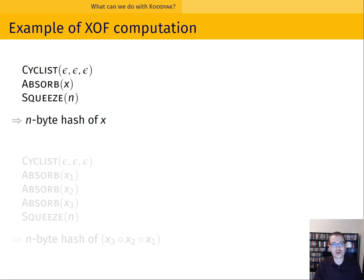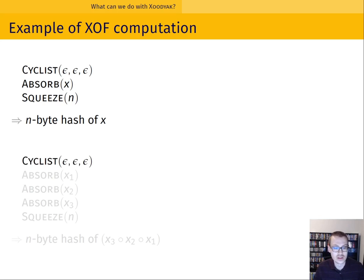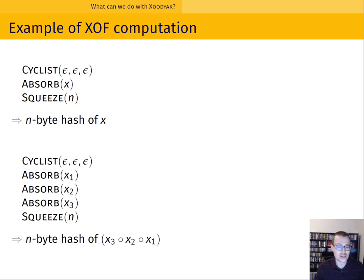What about something a bit more complex, like multiple strings? Again, we initialize cyclist with no key. We then absorb strings x1, x2, and x3, and then squeeze n bytes of output. This time the output represents the hash of the tuple of strings x1, x2, and x3, all properly domain separated.